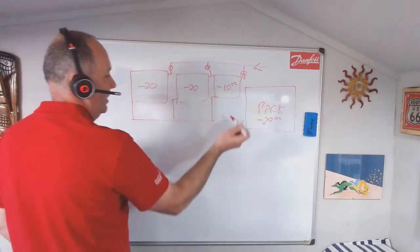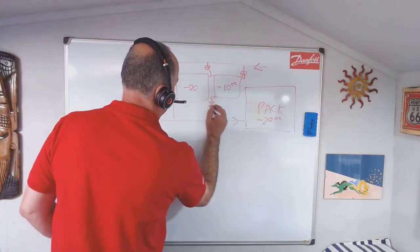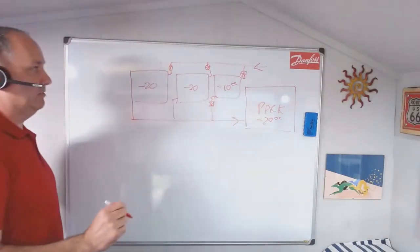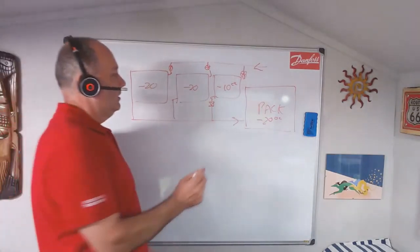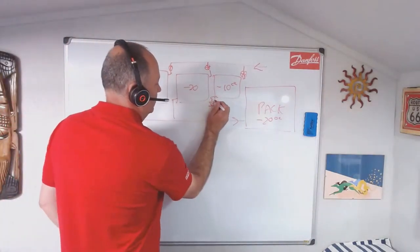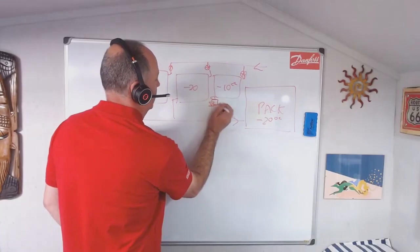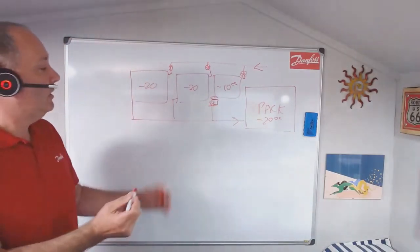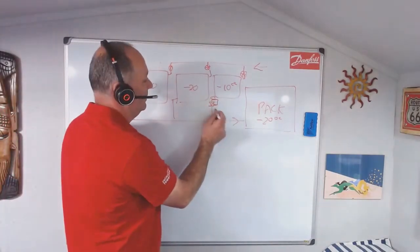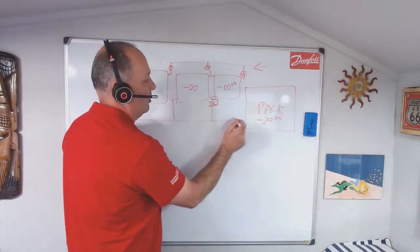If you want that one at minus 10, basically what we do is we put an evaporator pressure regulator valve on the suction line. And basically what that does is it controls that temperature or that pressure temperature relationship. So we basically throttle that suction gas coming back to the pack.